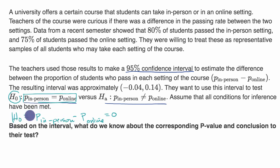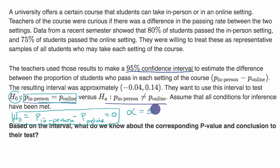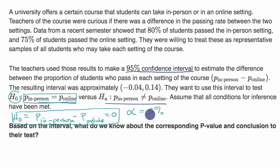In a hypothesis test, we assume that the null hypothesis is true, and we set a significance level — typically 5%. If the probability of getting the sample results we do get, meaning the difference in sample proportions, is less than 5%, that's pretty unlikely and we reject the null hypothesis, which suggests the alternative.